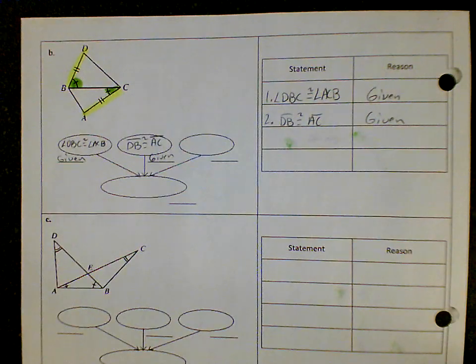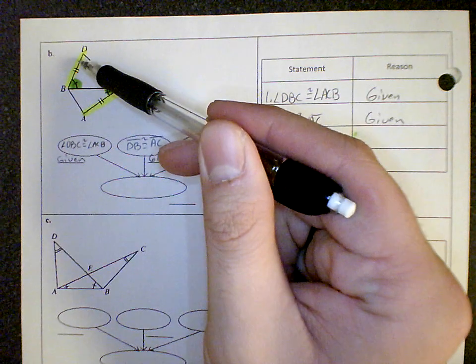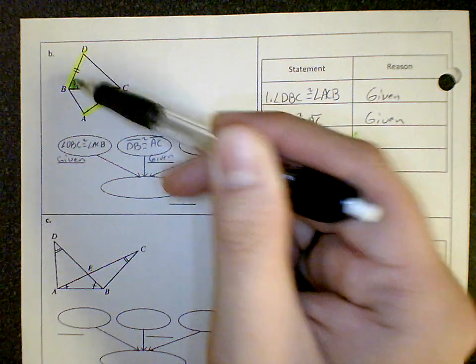And so we need a third thing here to prove that the two triangles are congruent. So we either need to know these angles and then we'll have angle, side, angle.